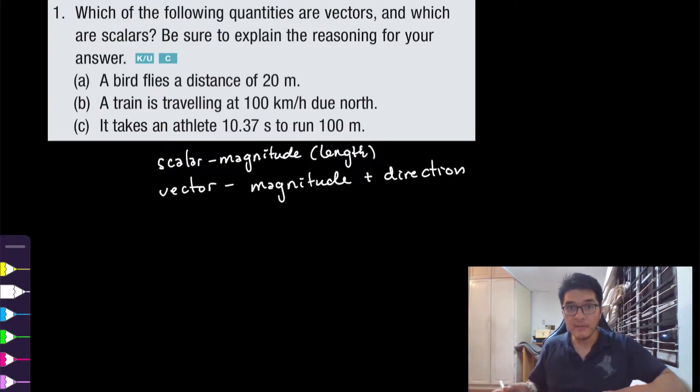Now that we have criteria we can look at our question once again. If we're looking at a bird flying a distance of 20 meters, we only know the distance that's been traveled. We don't know in what direction, so we have to say that this will be a scalar quantity.